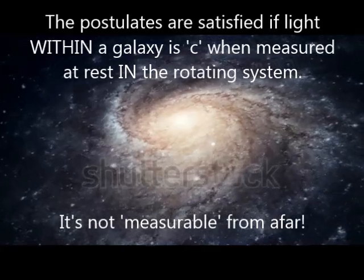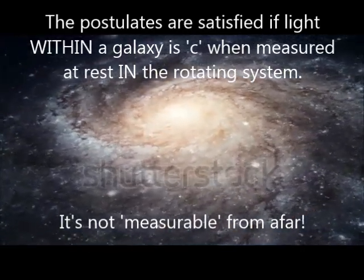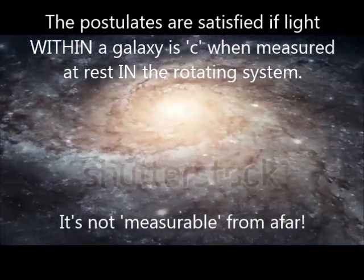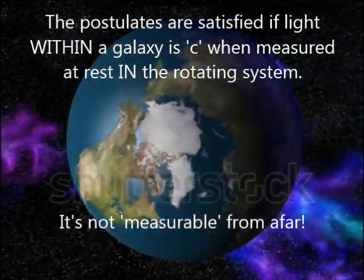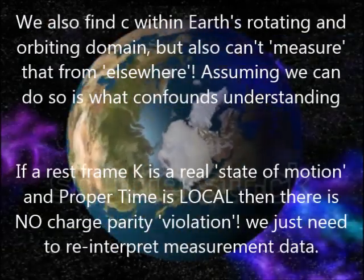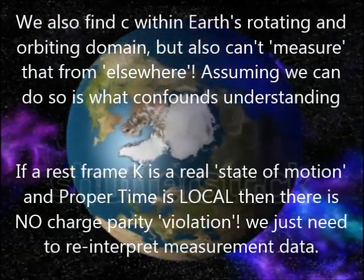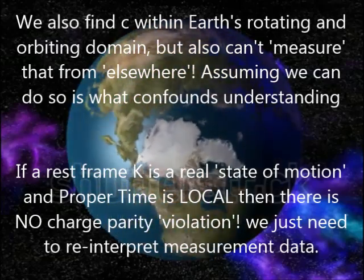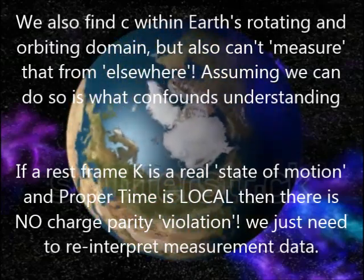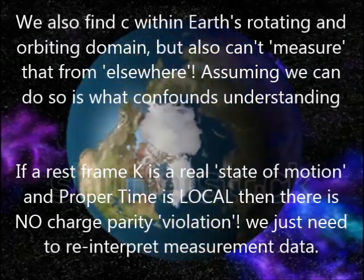They are satisfied if light within a galaxy is c when measured at rest in the rotating system. It is unmeasurable from afar. We also find c within Earth's rotating and orbiting domain but also can't measure that from elsewhere. Assuming we can do so is what confounds understanding.